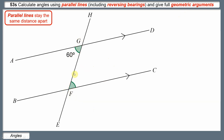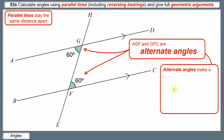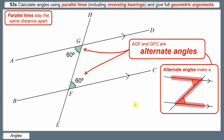If this angle here is 60, this angle over here will also be 60. We want to say that AGF and GFC are the same. AGF is on one side of the transversal line and GFC is on the alternate side, so we describe them as alternate angles. Alternate angles always make a Z shape — the angles are in the inside corners of the Z.